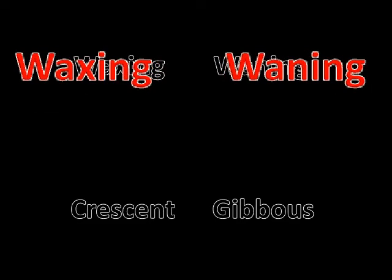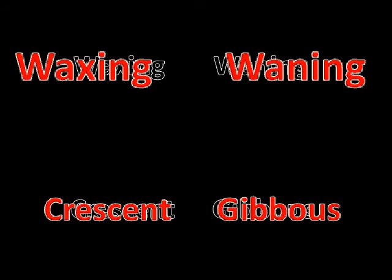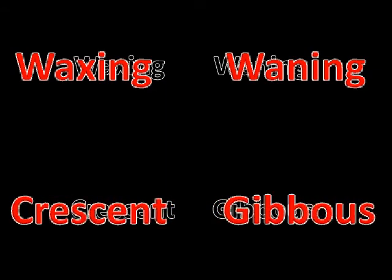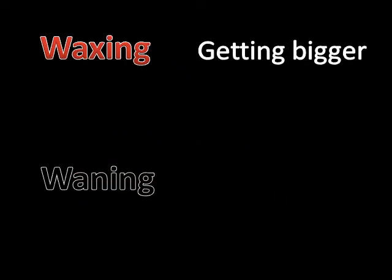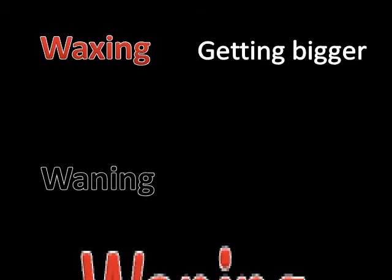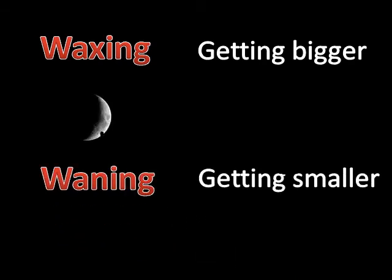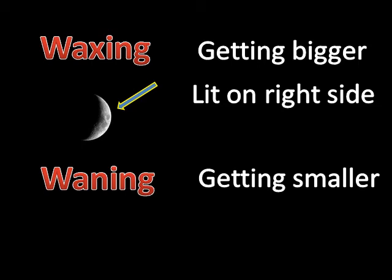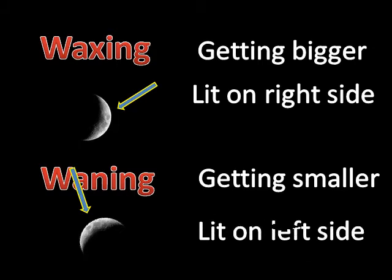One pair is waxing and waning. The second pair is crescent and gibbous. Waxing means getting bigger, while waning means getting smaller. If the phase is lit on the right side, the lit area is getting bigger or waxing. If the phase is lit on the left side, the area that is lit is getting smaller or waning.